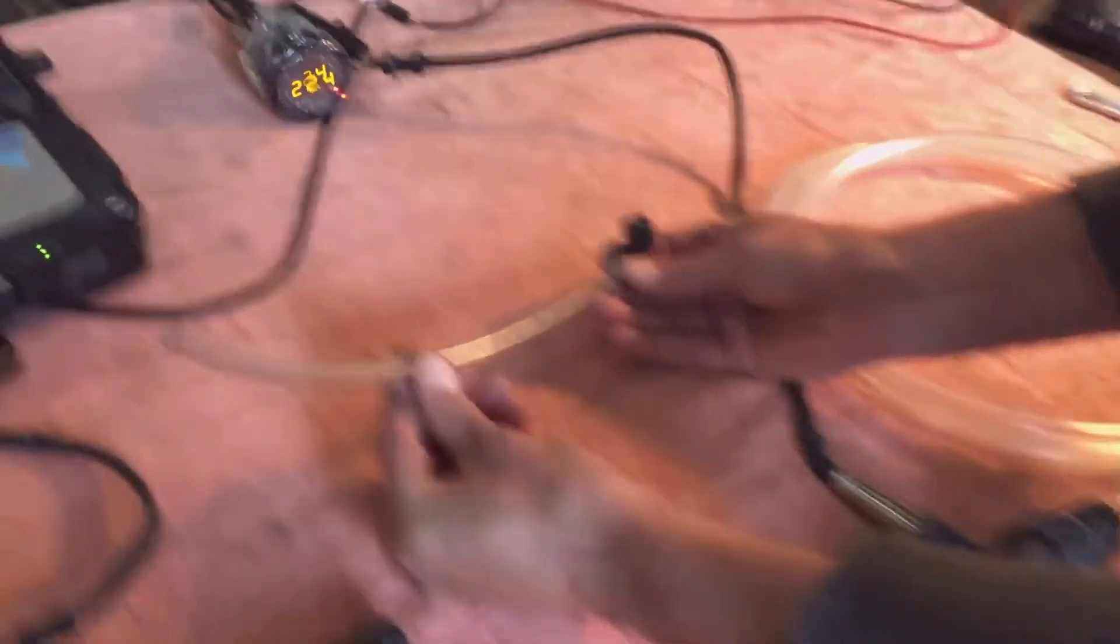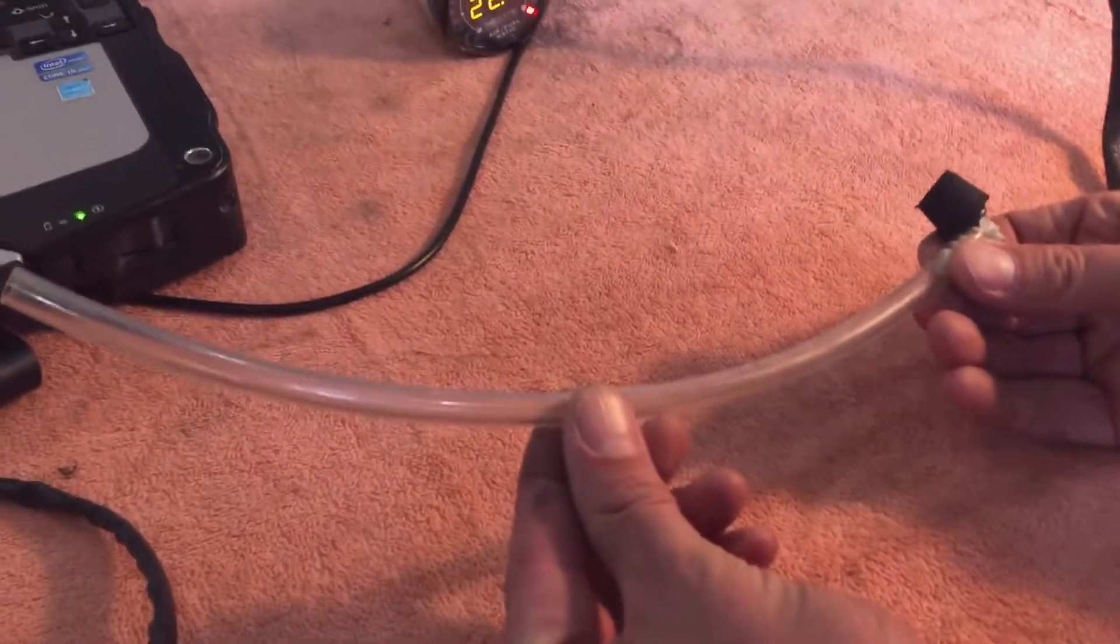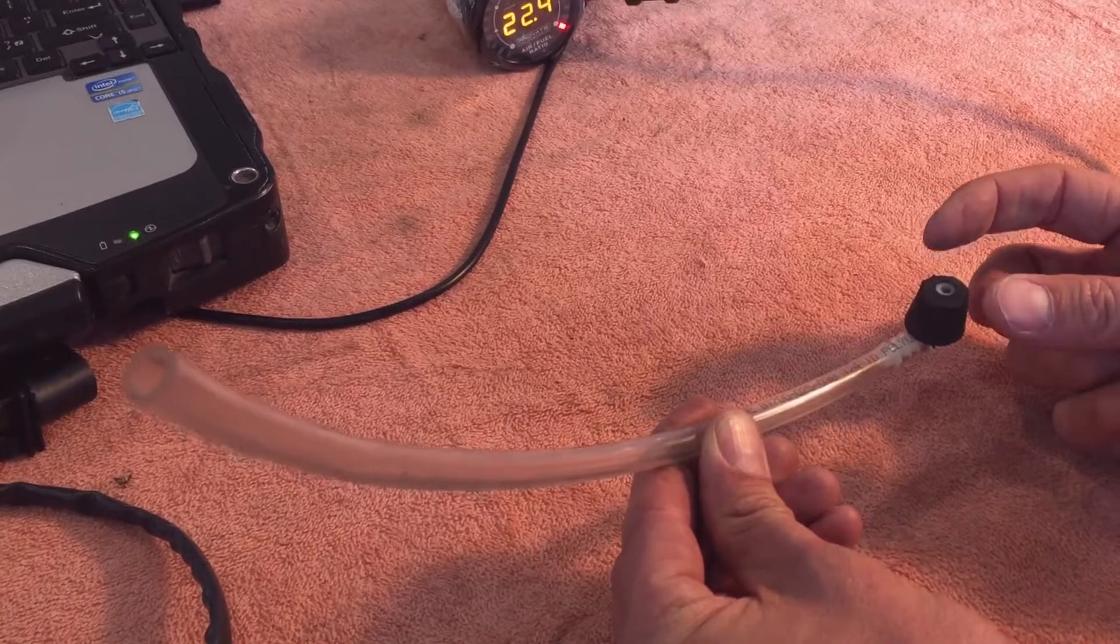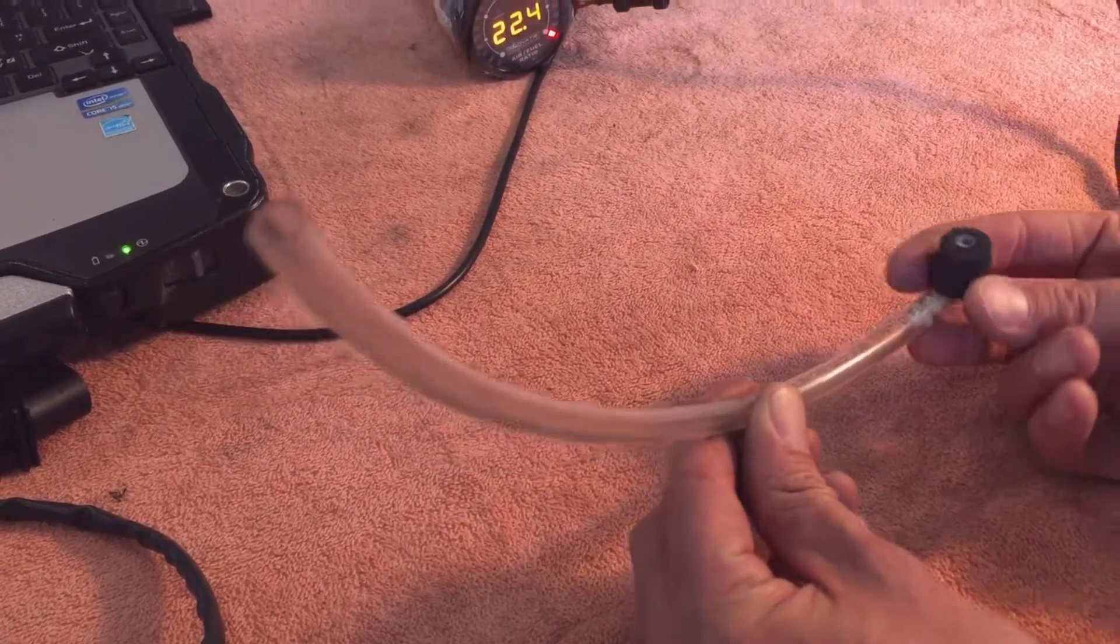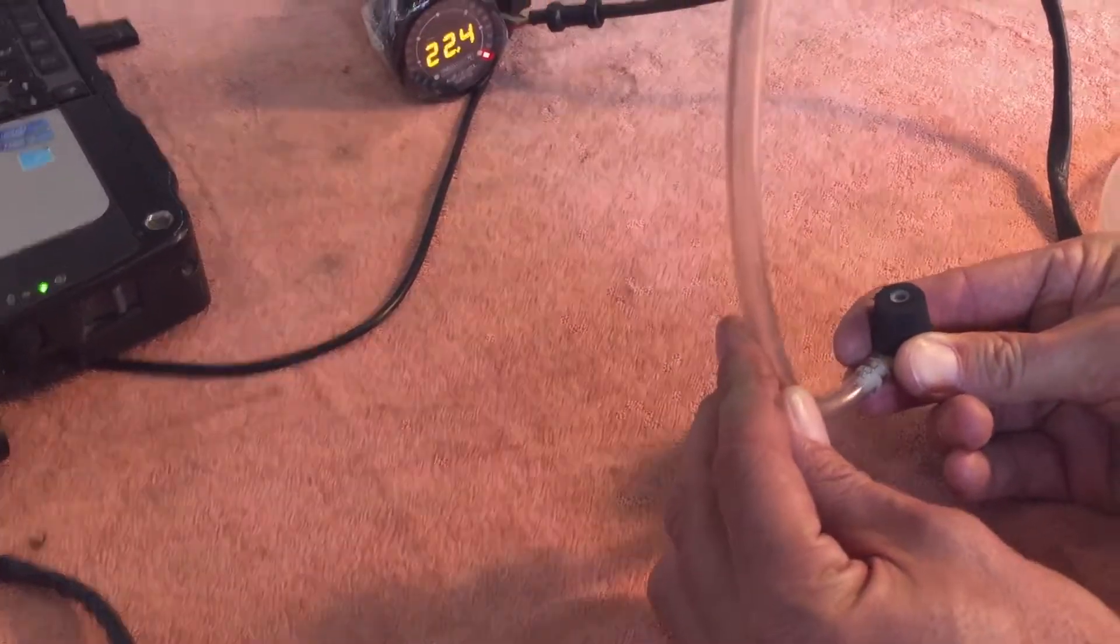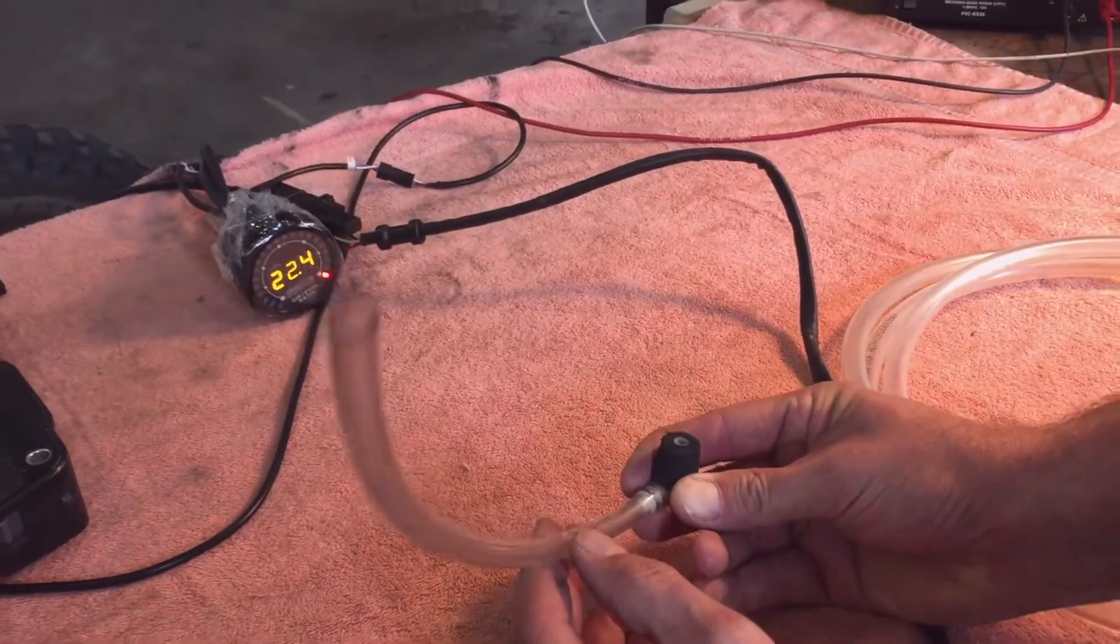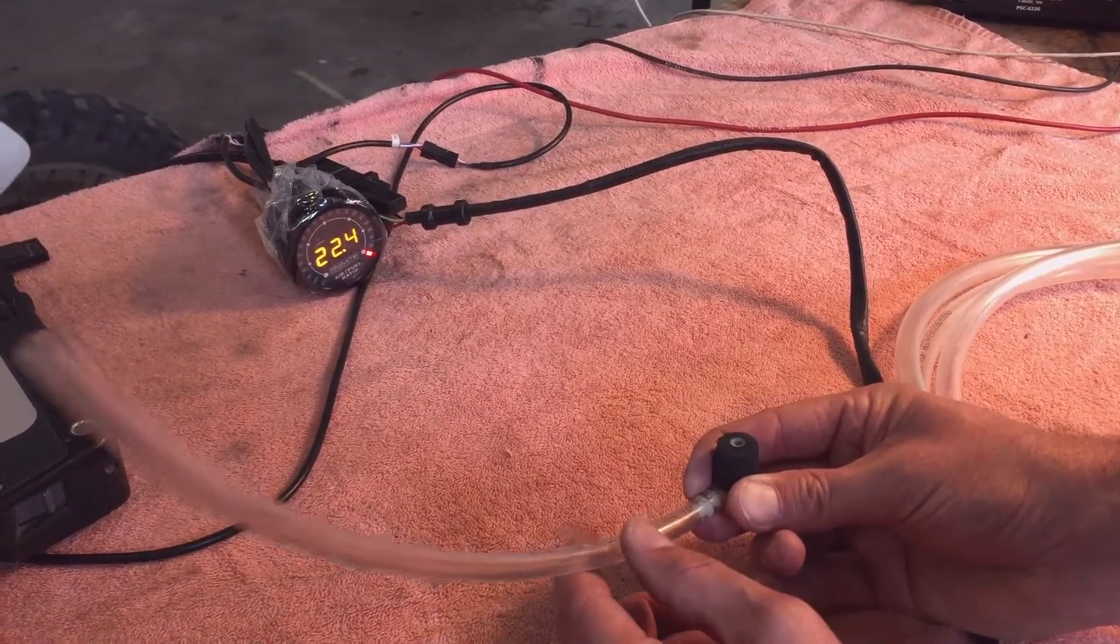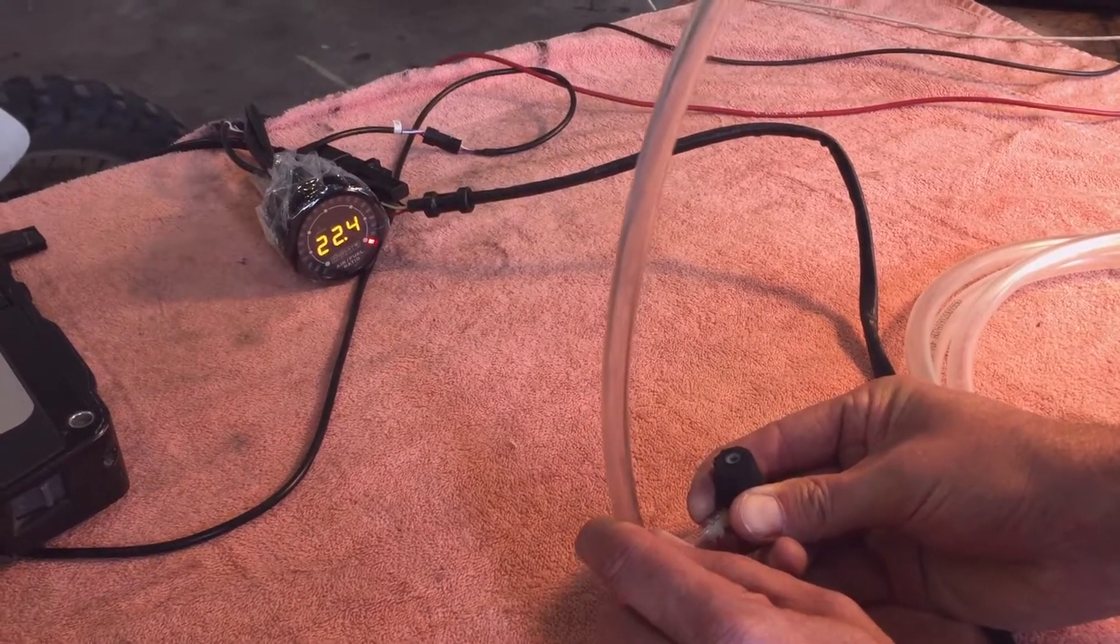This is what I use for setting float levels. We take the bolt off the bottom of the carb, push and hold this in, turn on the fuel, tip this up, and this will show me, on the bike, what the fuel float level is. It's important to do this on the bike.